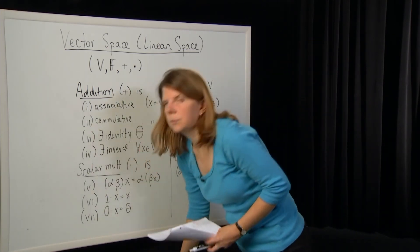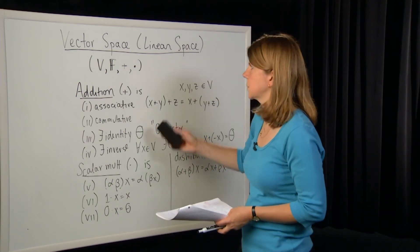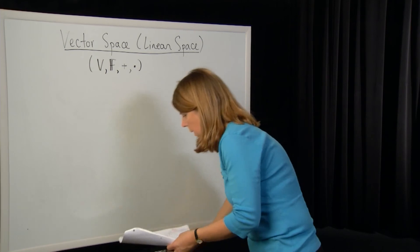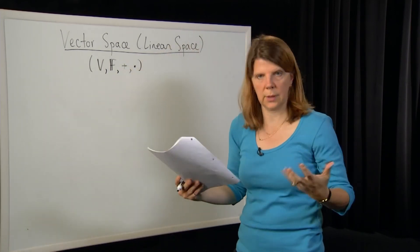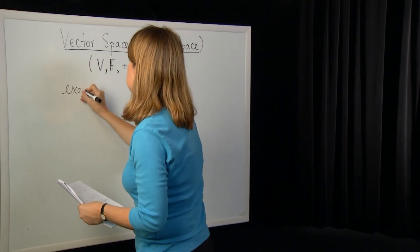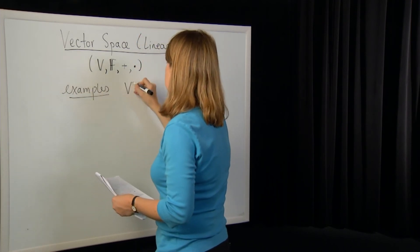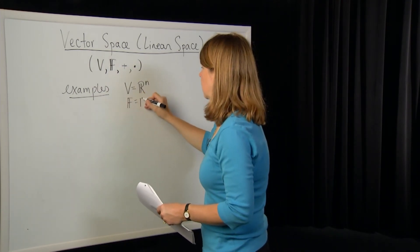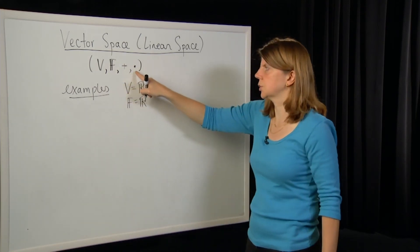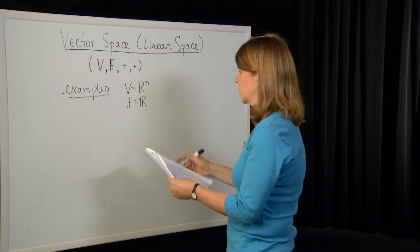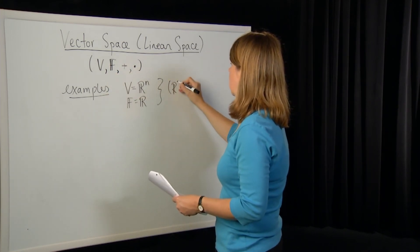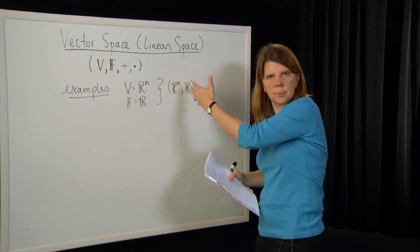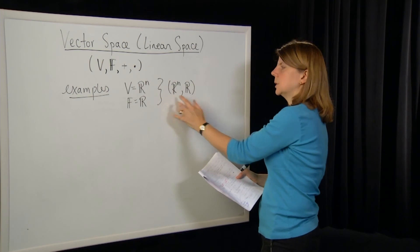Let's look at some brief examples of vector spaces. We often think of the space of vectors ℝⁿ — we spend a lot of time with ℝⁿ over the field of reals with standard definitions of addition and multiplication for vectors. We typically write this as ℝⁿ over ℝ, and don't write the operations explicitly since we assume the standard ones.